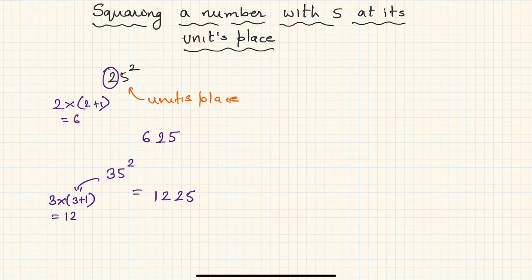Let us take another example. Let's say I have to find out 55 squared. So 25 will be the last two digits, and 5 will be multiplied by its next number, that is 5 plus 1, which is 6. So answer is 30. Just affix this 30 here, so the square of 55 is 3025.